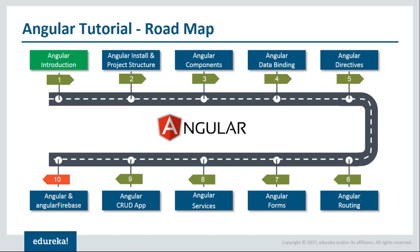Then comes routing. Routing helps in directing a user to a different page or section of your web app. For example, if you are on the homepage of an Angular website and you click on a button for viewing the about page, this will open the about component for you. Basically, routing helps you navigate between different components in your web application.